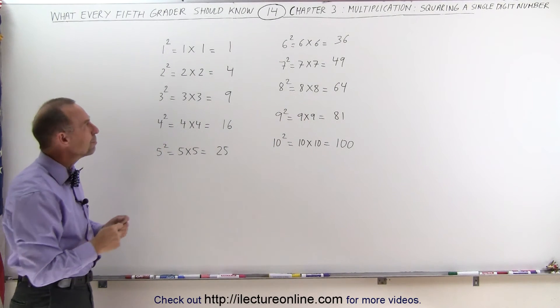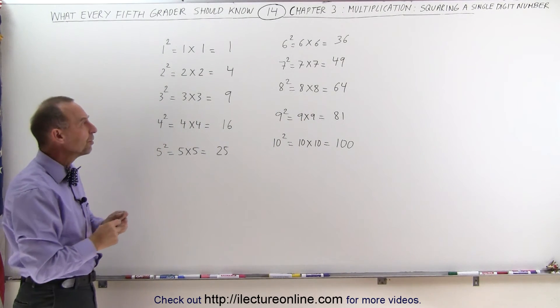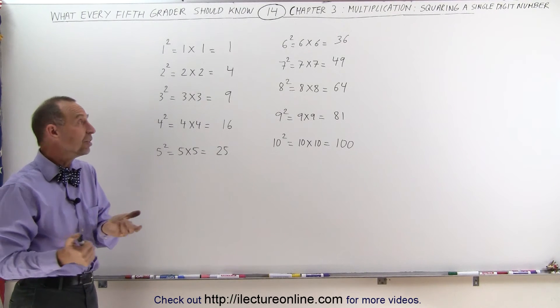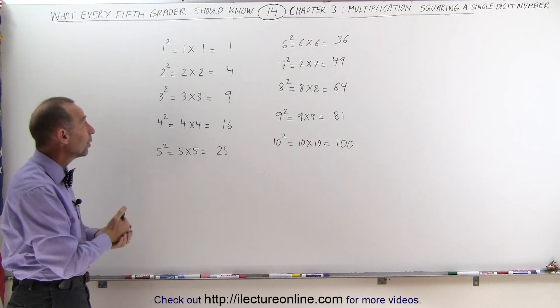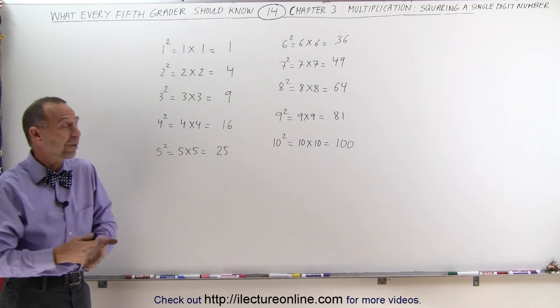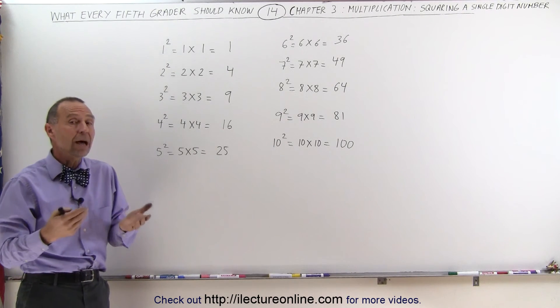So it's a good idea to memorize these outright. Besides also memorizing the multiplication tables, we should memorize 1 times 1, 2 times 2, 3 times 3, 4 times 4, 5 times 5, and so forth, because these come up a lot.